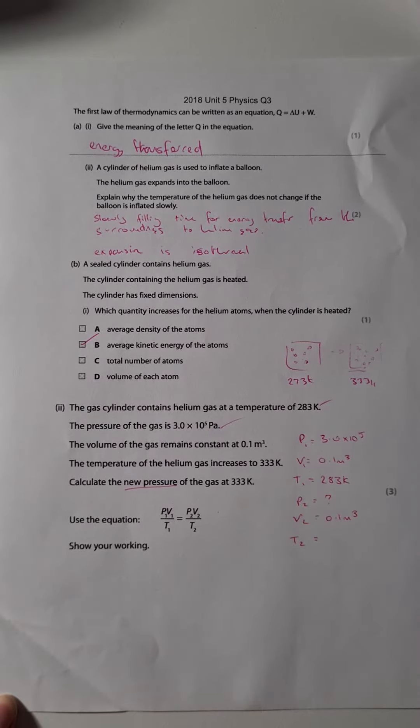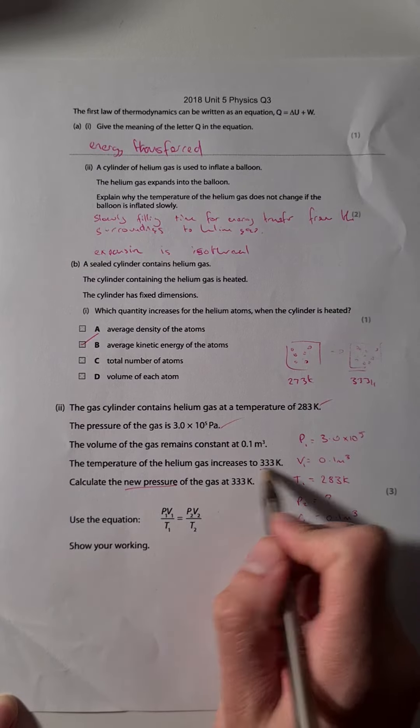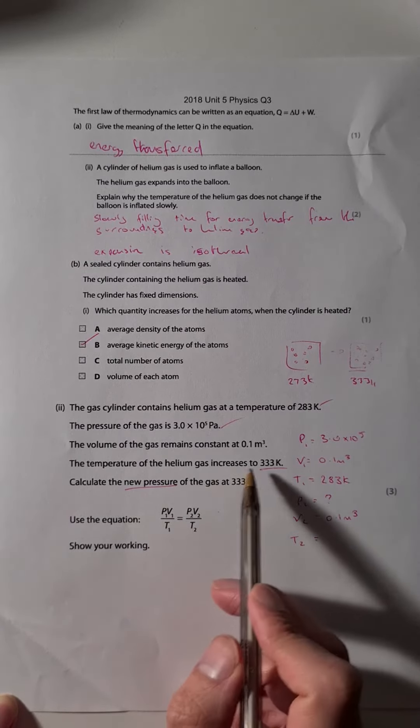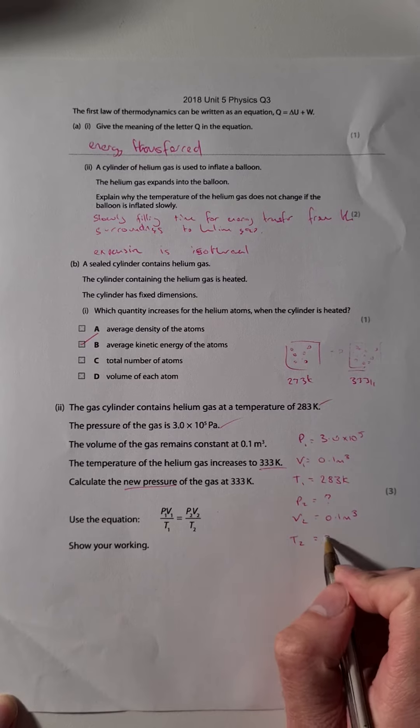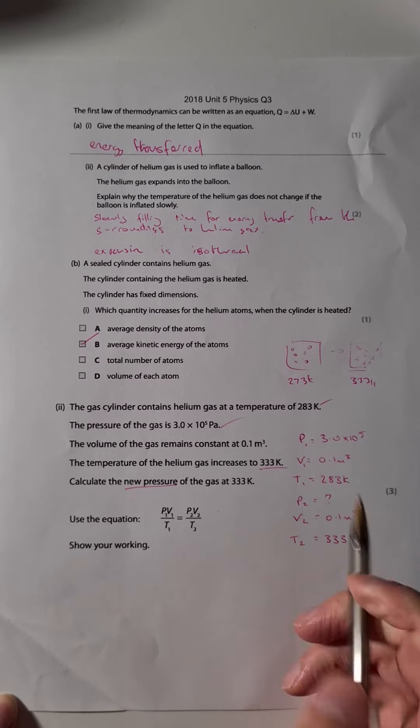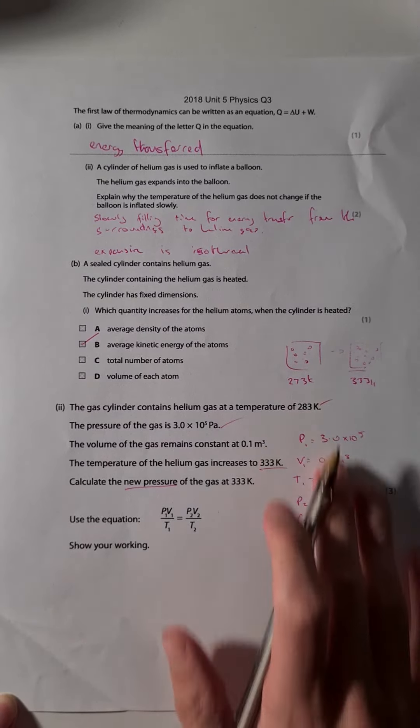The volume of the gas remains constant at 0.1 meters cubed. This tells me that the volume is 0.1 meters cubed, but that it remains constant, so volume two also is going to be 0.1 meters cubed. That doesn't change. And then I've got the temperature of the helium gas increases to 333 Kelvin, so that's going to be my second temperature T2.